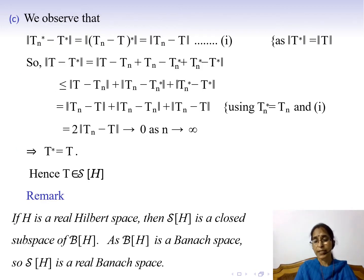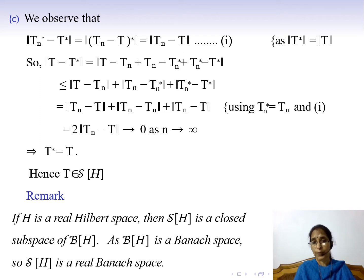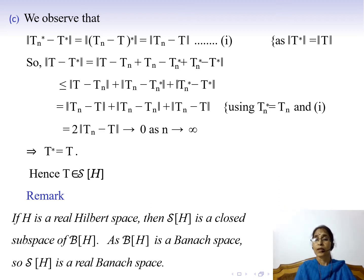Let us prove result C. It is given that {Tₙ} is a sequence of self-adjoint operators and Tₙ converges to T; we must show T is self-adjoint. We first observe that ‖Tₙ* − T*‖ = ‖(Tₙ − T)*‖ = ‖Tₙ − T‖, using the fact that ‖A*‖ = ‖A‖ for any bounded linear operator. Mark this as equation (1).